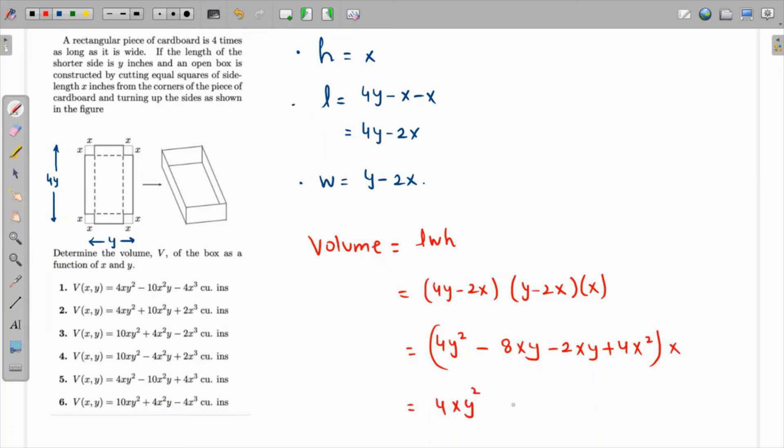So this will become 4xy² minus 8x²y minus 2x²y plus 4x³. This is how it looks like, and this is the volume. Let's see which option is the best matching. So 4xy² - in fact, minus 8x²y and minus 2x²y are like terms.